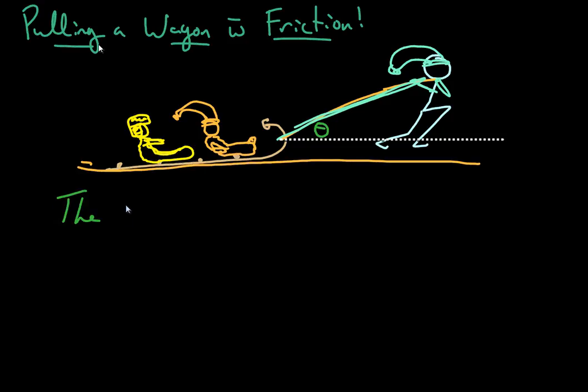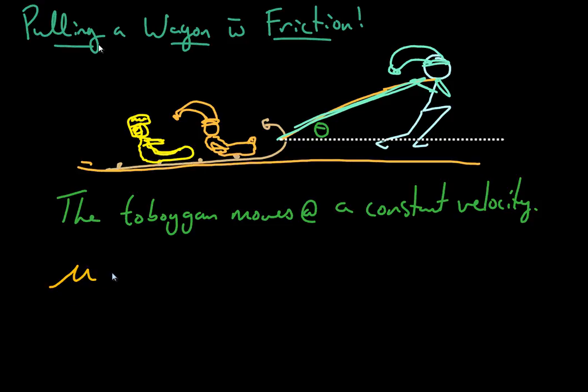So the first thing is the toboggan moves at a constant velocity. That's axiom one. It moves at a constant velocity. The other thing we're going to say is that the mu value, in other words the coefficient of friction between the bottom of the toboggan and this brown snow they're moving across, is 0.2.